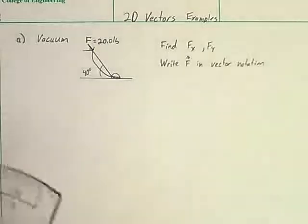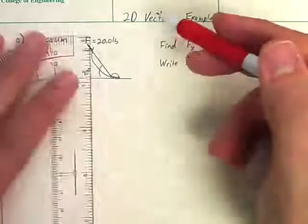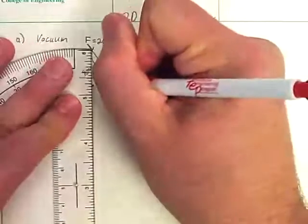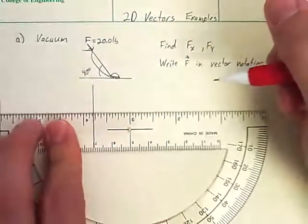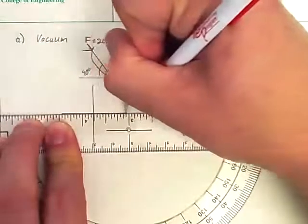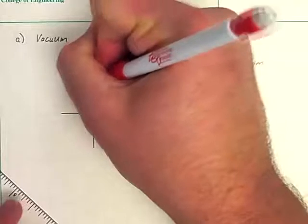One of the key things here is to start by drawing what we call a free body diagram. So to do that, I'm going to build an axis. So that's my X direction, that's my Y direction.